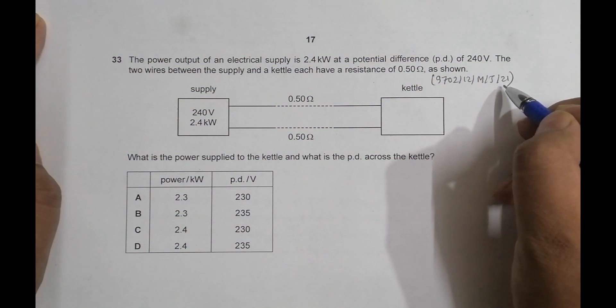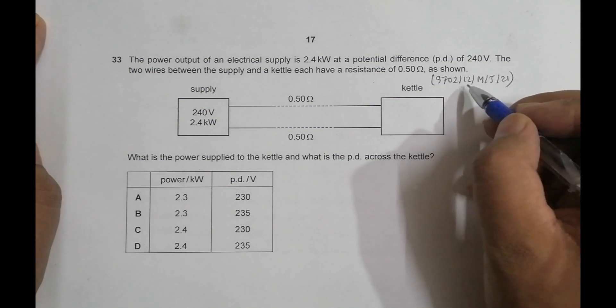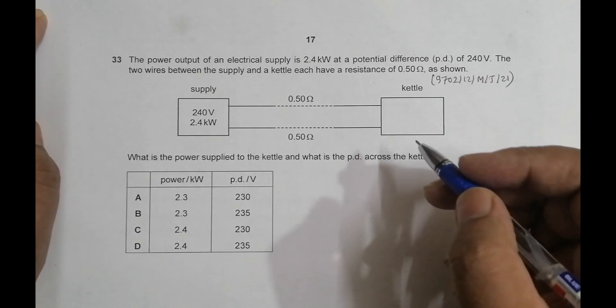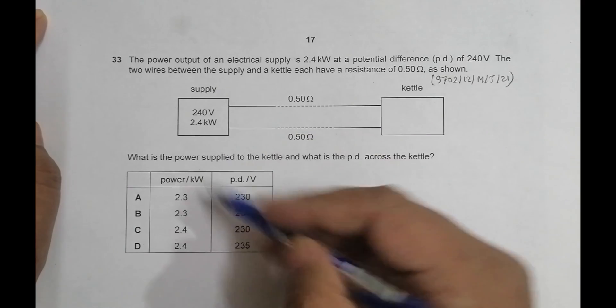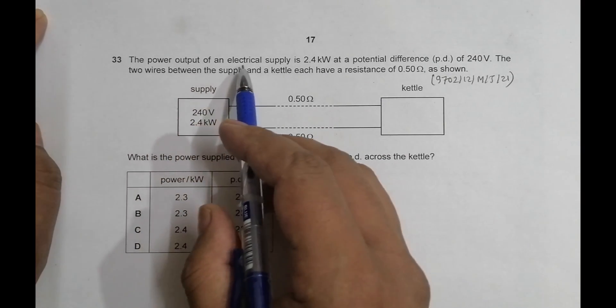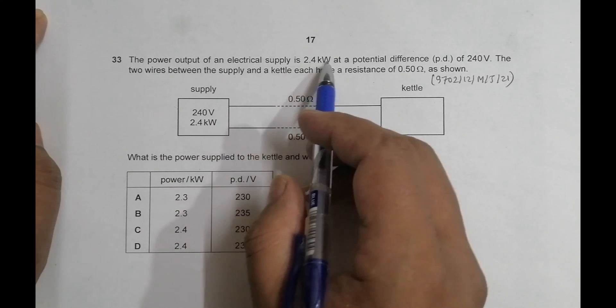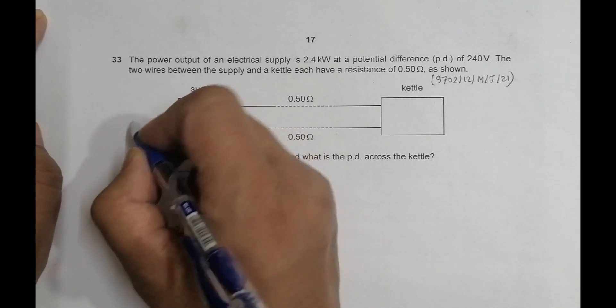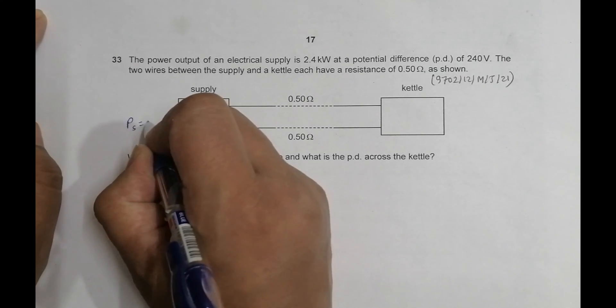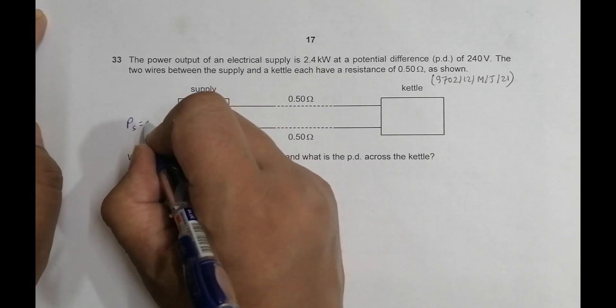Hello folks, today it is 1221 May June paper 12 and the question number is 33. This question is concerned with the chapter of current electricity. As you can see from the diagram, it says the power output of an electric supply is 2.4 kilowatts.